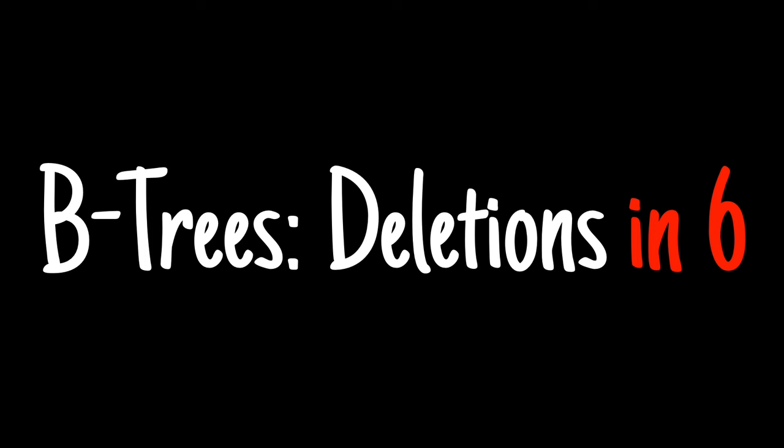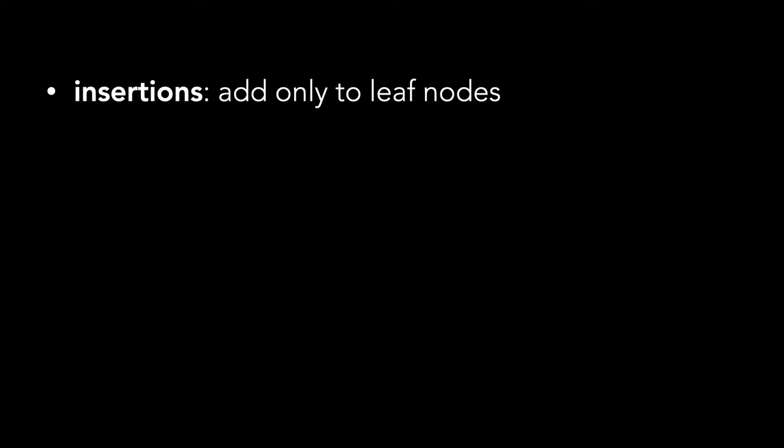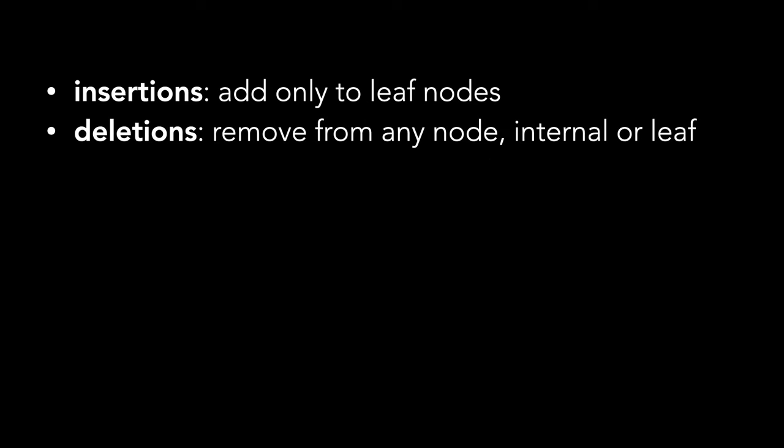Today we're going to wrap up the series on B-trees and talk about deletion. With insertion, we added keys to only leaf nodes. With deletion, we need to be able to remove a key from any node, internal or leaf.